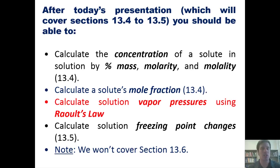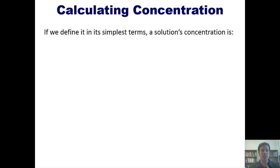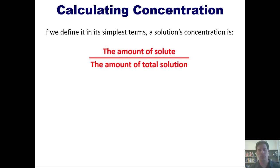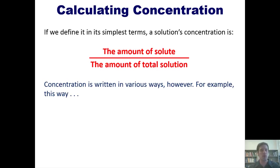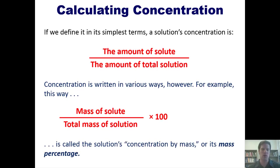Let's get started by first teaching you how to calculate concentration. If we define it in its simplest terms, a solution's concentration is the amount of the solute divided by the amount of solution. As it turns out, concentration can be written in various ways. For example, this way, in which we have the mass of the solute divided by the total mass of solution times 100, is known as the solution's concentration by mass, or mass percentage.